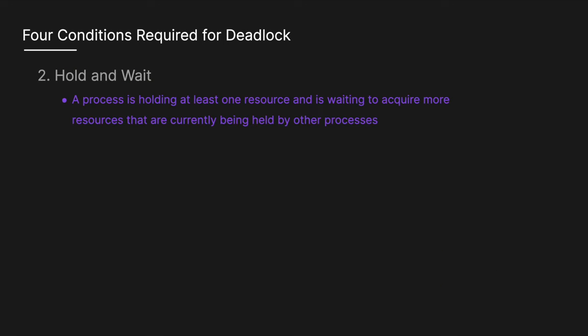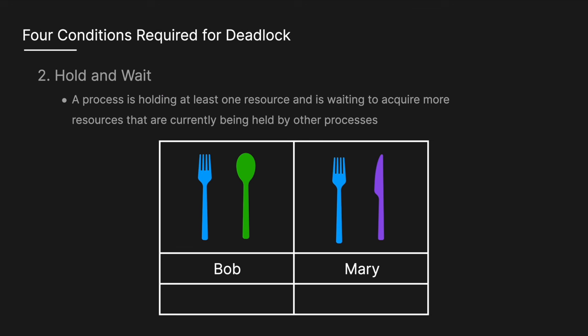The second condition is hold and wait — a process is holding at least one resource and is waiting to acquire more resources that are currently being held by other processes. An analogy: imagine a dinner table where Bob is holding a fork and needs a knife to eat, so he waits for the knife that Mary is using. At the same time, Mary is holding a knife and waiting for a spoon Bob is using — both are holding one thing but waiting for another.